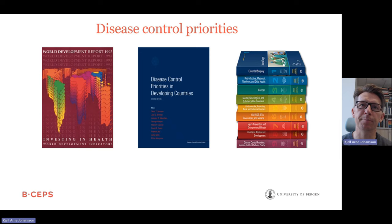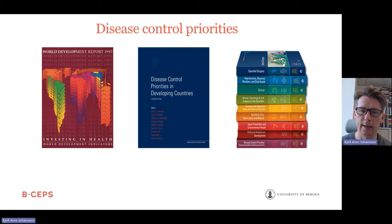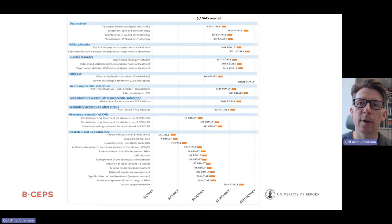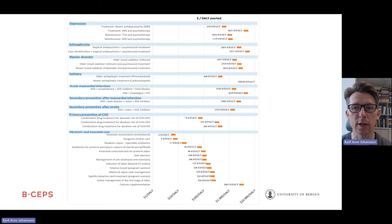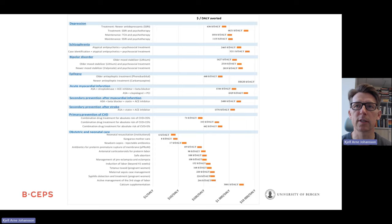The Disease Control Priorities Project is important globally when it comes to what health economics means in practice. There are three editions of Disease Control Priorities, and now the fourth edition is a work in progress. The information you get from a cost-effectiveness study is, for example, how many dollars do you have to pay to get one disability-adjusted life year in return? Disability-adjusted life years (DALYs), quality-adjusted life years (QALYs), or life years are standard metrics used to measure the value of dollars invested in cost-effectiveness analysis. The advantage with DALYs or QALYs is that they can be used to compare across different specialties.